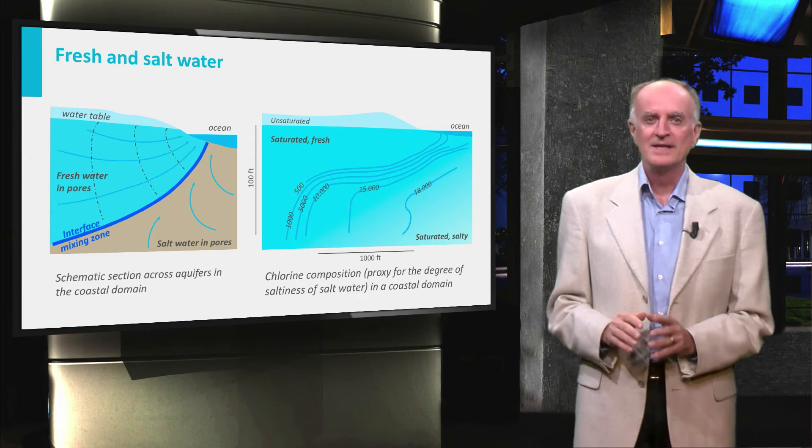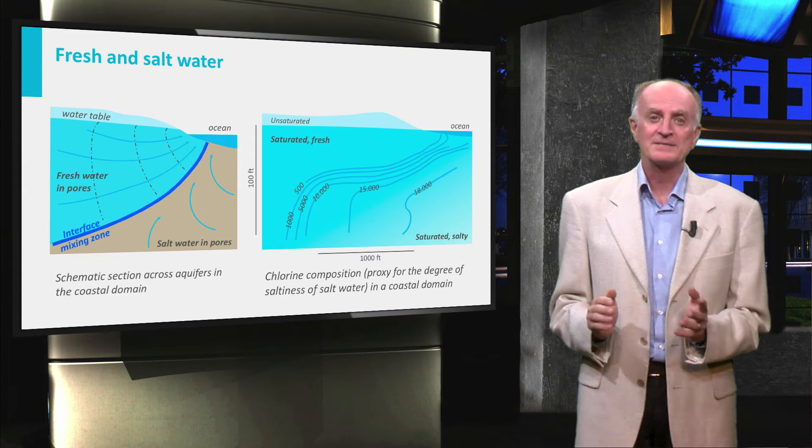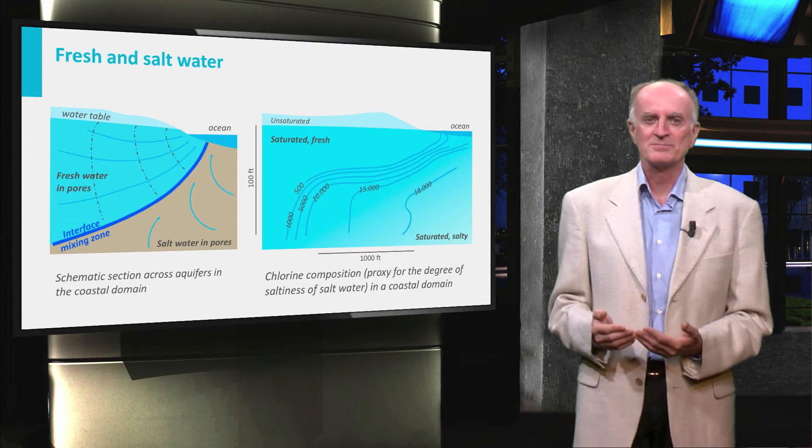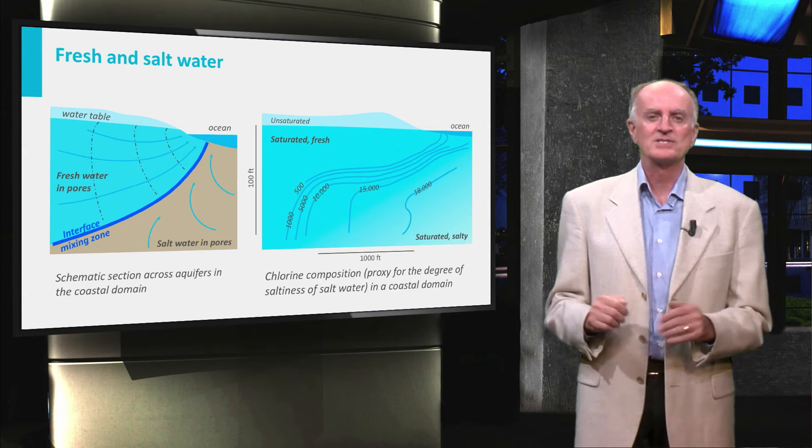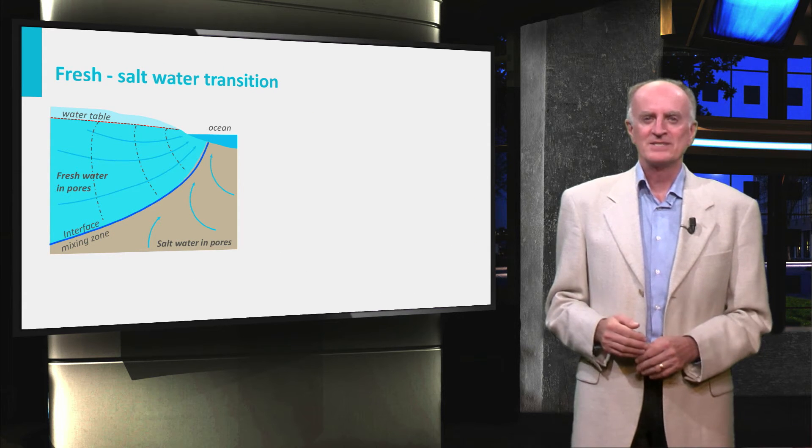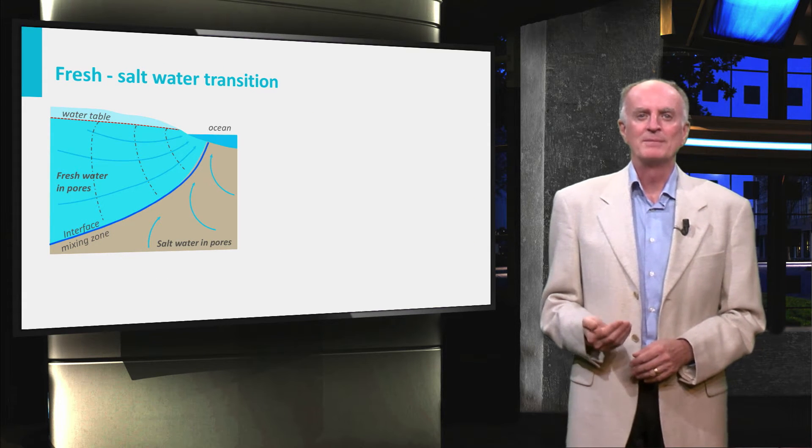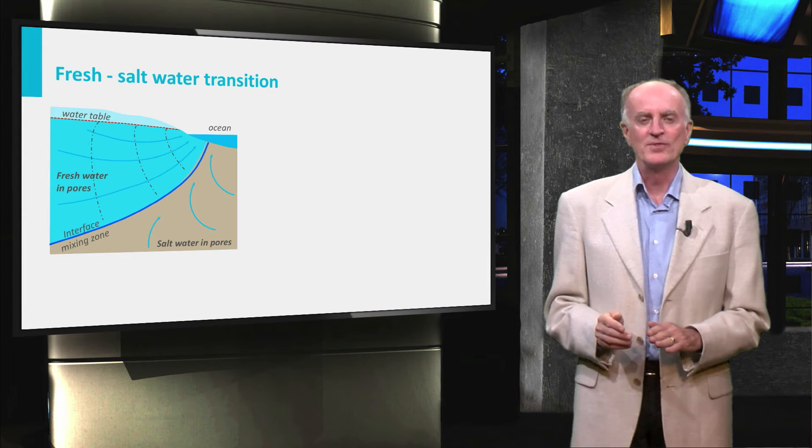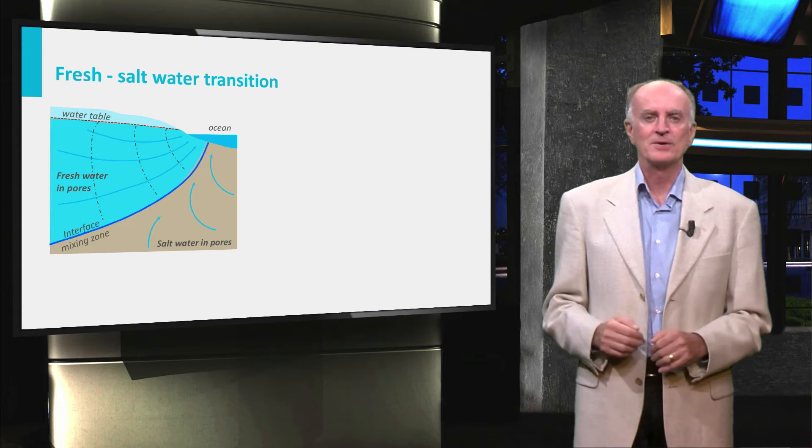On a longer time scale, that of tens of years, things might be different in relationship with decreases in precipitation, predicted by some climate change models. Not surprisingly, human intervention can have a major impact on the position of the transition zone and therefore on the quality and quantity of water supplies in the coastal domain.